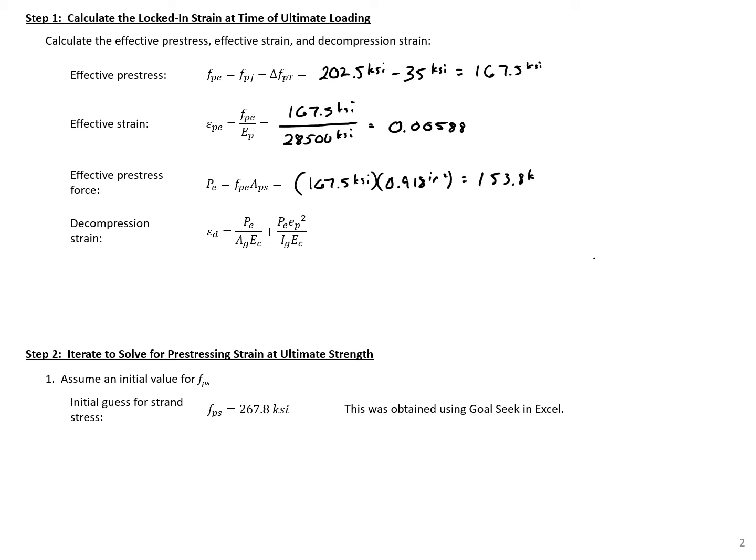We can use this then to find a decompression strain. This is a strain that's recommended to be included in this approach by Dolan and Hamilton. It doesn't make a huge difference whether you include it or not, but I'm going to show you how to find it here and include it just for completeness sake for the example.